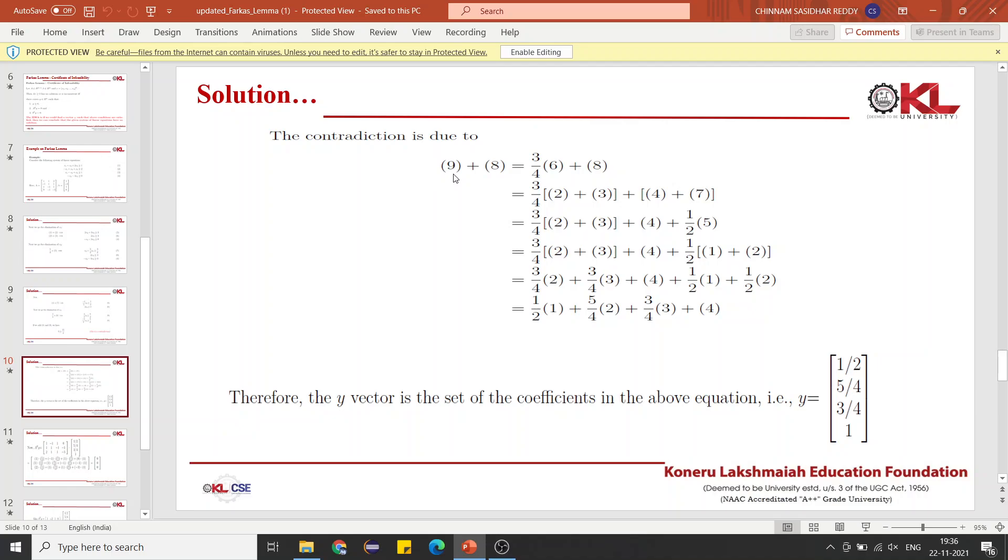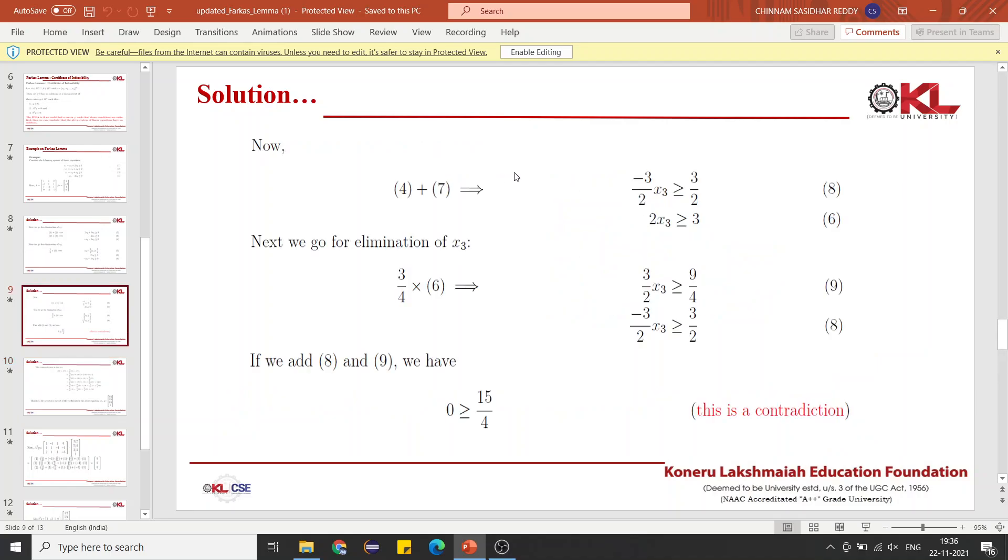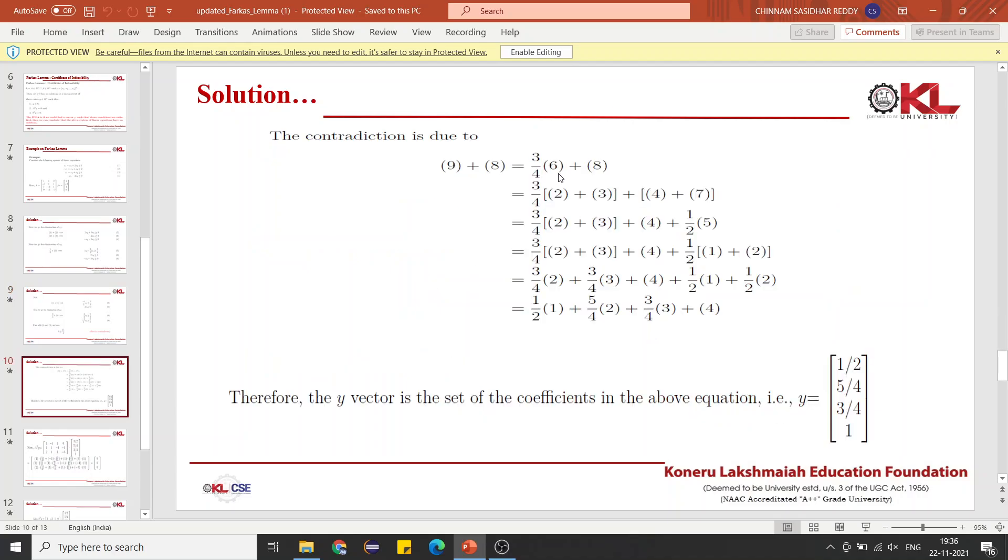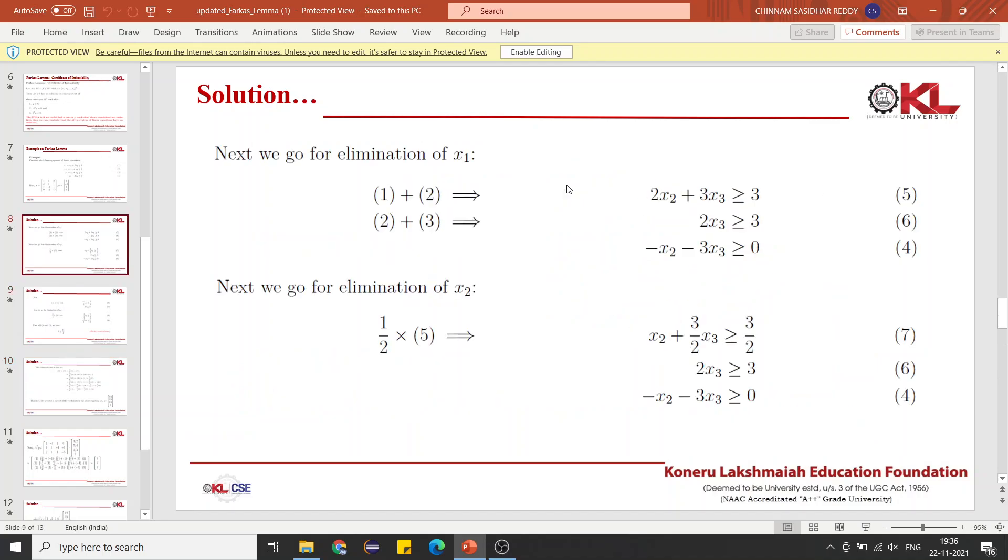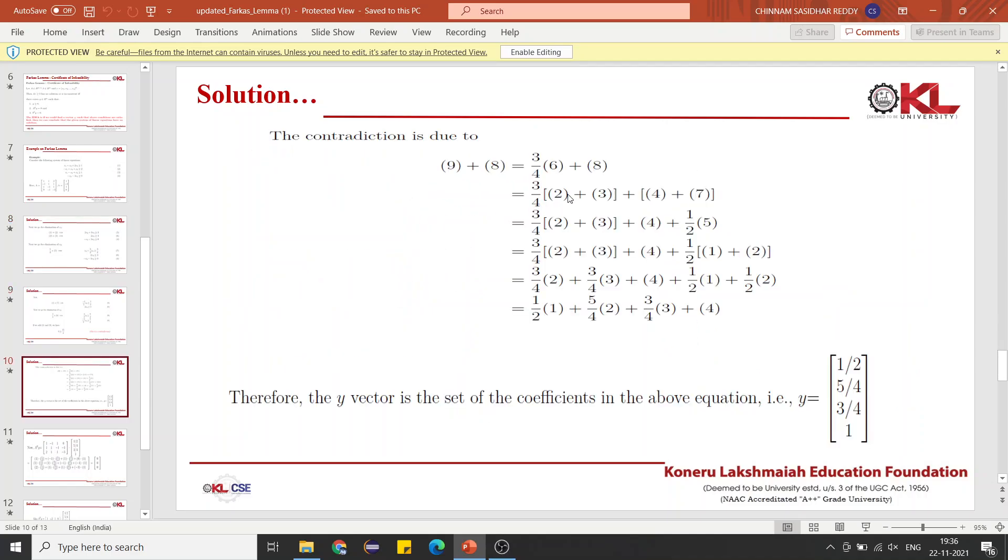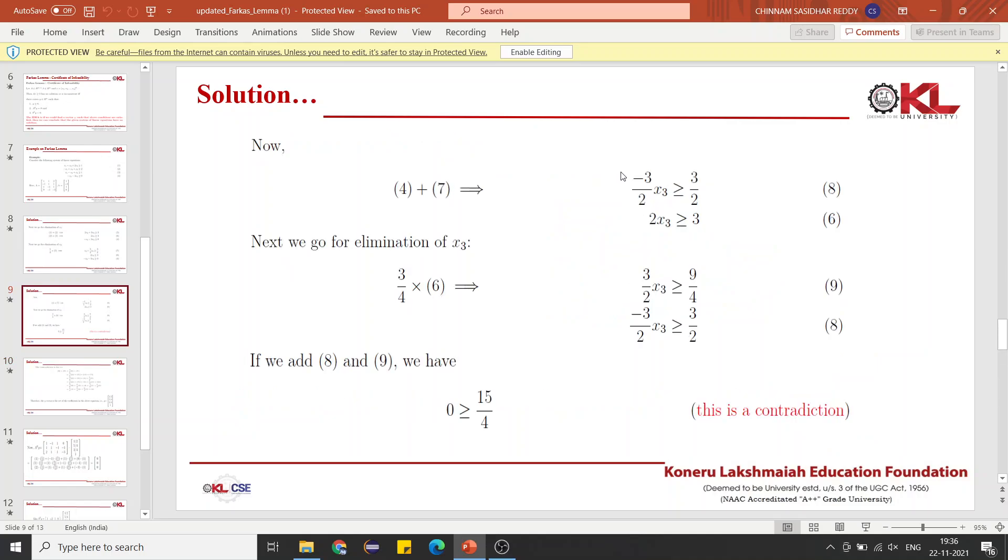How did we get 9? I told you it is very important to write these numberings. We got 9 from 3/4 times 6. Then where did we get this 6 from? We got 6 from 2 plus 3. Write 2 plus 3 in place of 6. And where did we get 8 from?